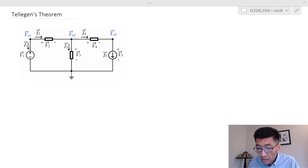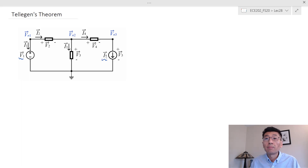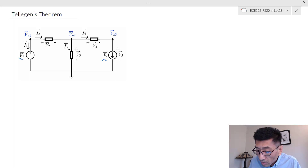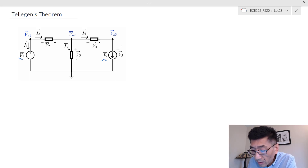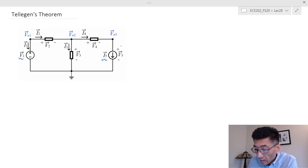Let's look at the conservation of complex power. We have a simple circuit where all voltages occur following passive sign convention for all the elements, including the sources. I have a voltage source v sub one and a current source i sub five, but I label them all in passive sign convention. That means the current going into the positive terminal, and we will find all the complex power going to add up to zero — that's the conservation of complex power.